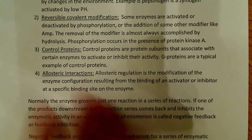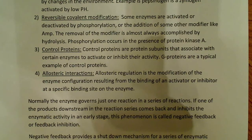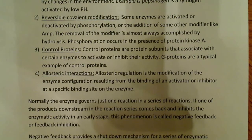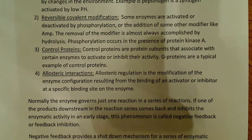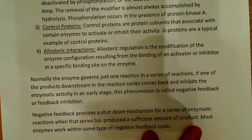A classic example of allosteric interactions is hexakinase, which is the first enzyme that catalyzes the phosphorylation of glucose. Hexakinase is activated by glucose, and it also has negative feedback inhibition resulting from glucose 6-phosphate, which actually inhibits hexakinase. Other common allosteric regulators include ATP, which generally deactivates enzymes involved in glycolysis.